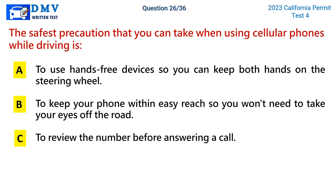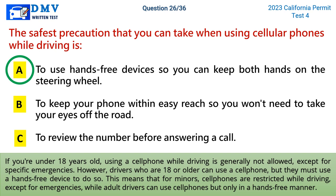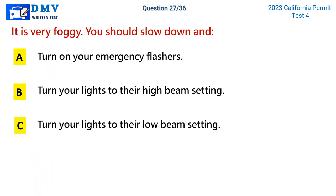Question 26: The safest precaution you can take when using cellular phones while driving is. A) to use hands-free devices so you can keep both hands on the steering wheel, B) to keep your phone within easy reach so you won't need to take your eyes off the road, C) to review the number before answering a call. The correct answer is A. If you're under 18, using a cell phone while driving is generally not allowed except for specific emergencies. Drivers 18 or older can use a cell phone but must use a hands-free device.